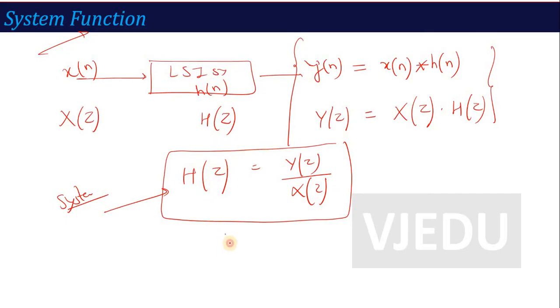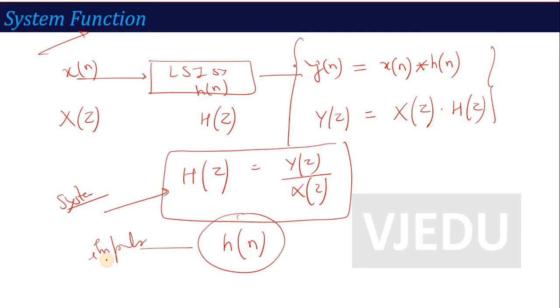When we take the inverse of H(z), what do we get? We get h(n), that is called the impulse response, which we have to calculate in this lecture. So let's explain it through examples — how to calculate H(z) and the impulse response.